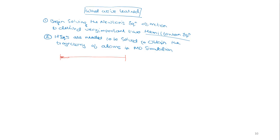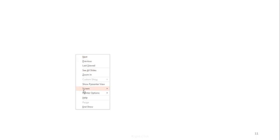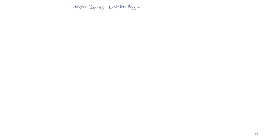In this way, by solving the Hamiltonian equations for the number of time steps in your simulation, you would be able to obtain a trajectory and analyze how the atoms in your protein will move. That is what we did in our previous lecture. In today's lecture, we are going to deal with a new topic called Taylor series and the velocity Verlet algorithm.